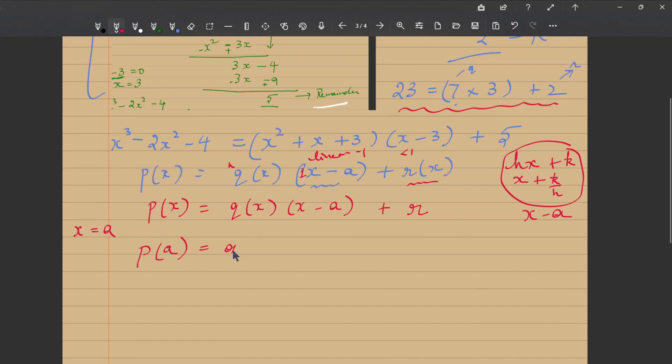Just that we have to replace the value of x by a. So P of a is equal to q of a into a minus a plus r. And look at what we got here. You have got a minus a which is 0. So if a minus a is 0, you multiply q of a by 0. Whatever be the value of your quotient, this whole term becomes 0. So 0 plus r, P of a is equal to 0 plus r.